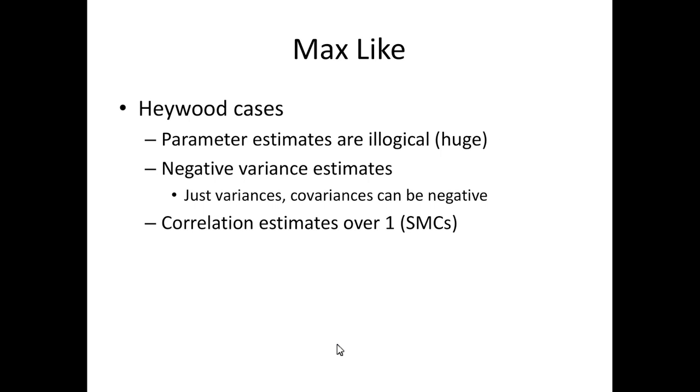In particular, there are things called Haywood cases. So Haywood cases, we'll talk about these a lot this semester, are when the parameter estimates are totally illogical, so extremely huge when they shouldn't be, negative error variance estimates. So I'm just talking about variances, not covariances. So any double-headed arrow between two latents or even between two errors, those are correlations so they can get negative. But variances cannot be negative.